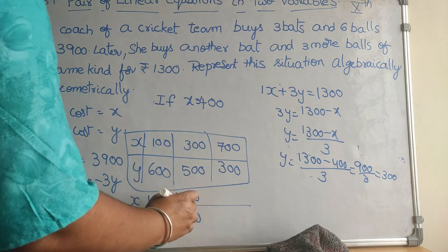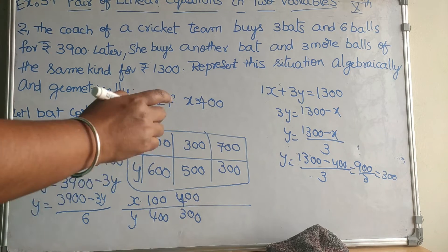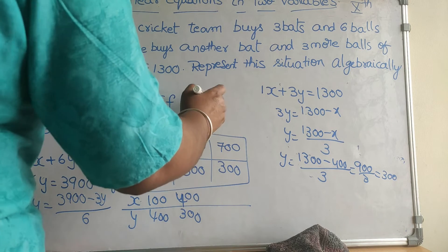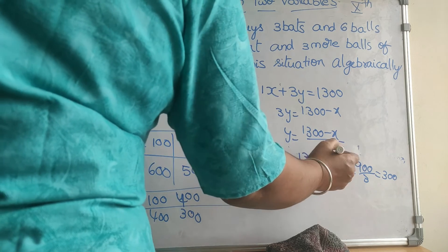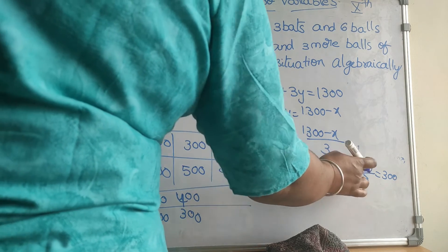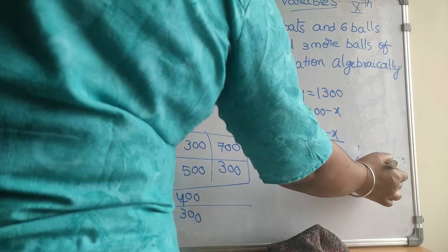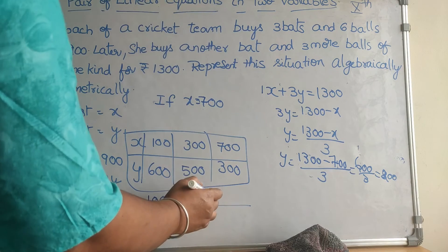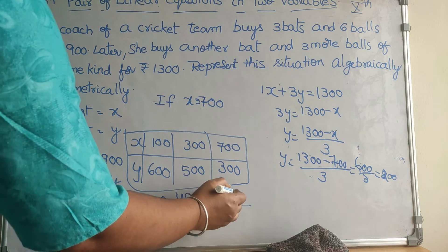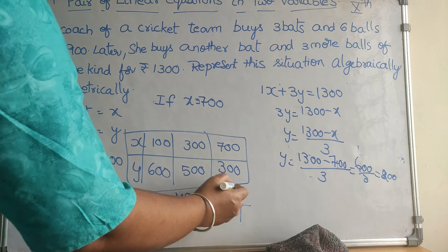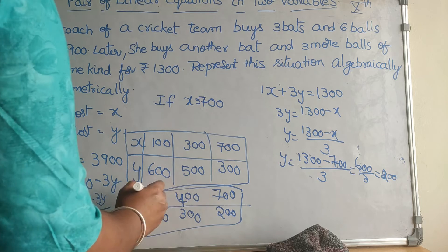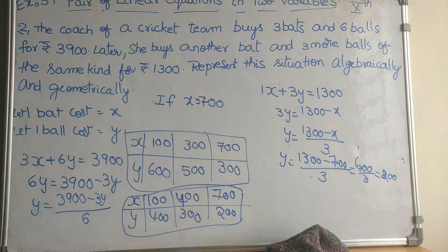If x = 700, then y = (1300 − 700) / 3 = 600 / 3 = 200. So when x is 700, y is 200. We now have a second table of values from the second equation. Now we will represent this geometrically.